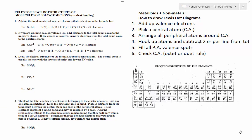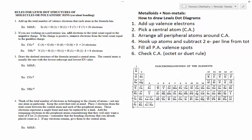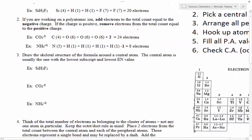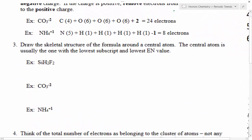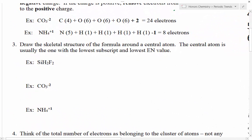We're going to start by looking at a couple of example problems and go through some of the finer details for how we can draw one of these. So we're going to start with a compound here, SiH2F2. I want you to appreciate that these are going to be metalloids and non-metals. Silicon, hydrogen, and fluorine are the atoms we have.